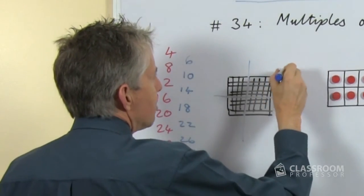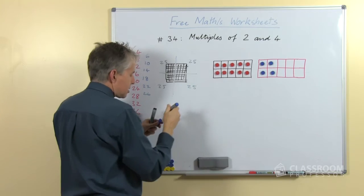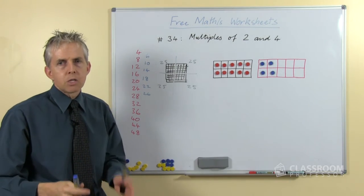We could do it that way, and of course there are 25 in each piece, students can recognize that by this stage, and so 100 itself is a multiple of 4.